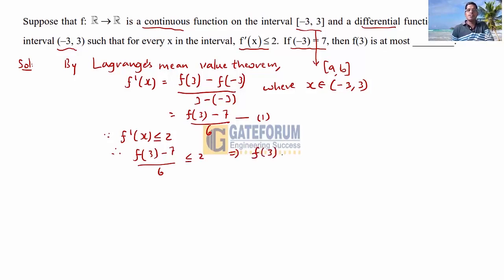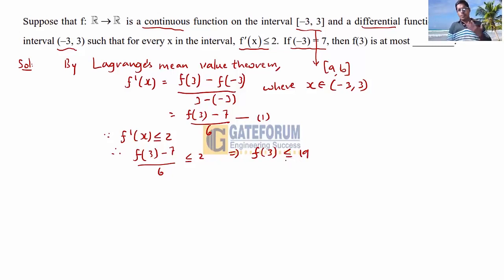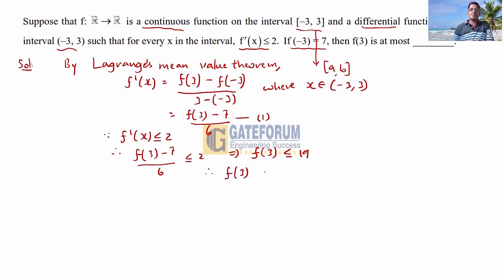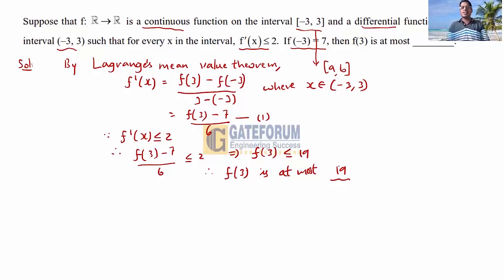Therefore F(3) ≤ 19, meaning F(3) can be 19, 18, 17, or any value less than 19. 'At most' means the maximum possible value, which is 19. So the answer is F(3) is at most 19.